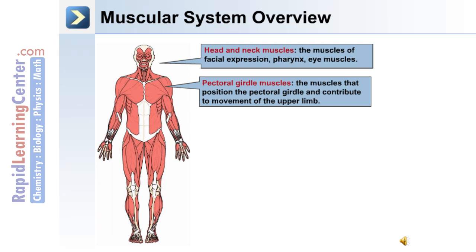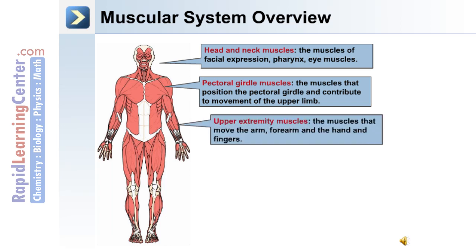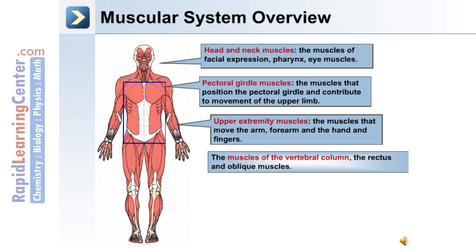The pectoral girdle muscles — the muscles that position the pectoral girdle and contribute to the movement of the upper limb. The upper extremity muscles — muscles that move the arm, forearm, the hand, and fingers. The muscles of the vertebral column, including the rectus and oblique muscles.